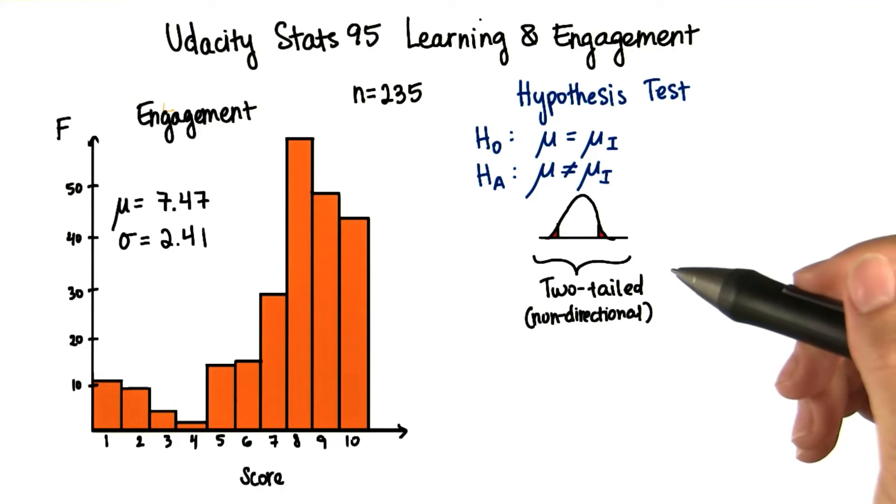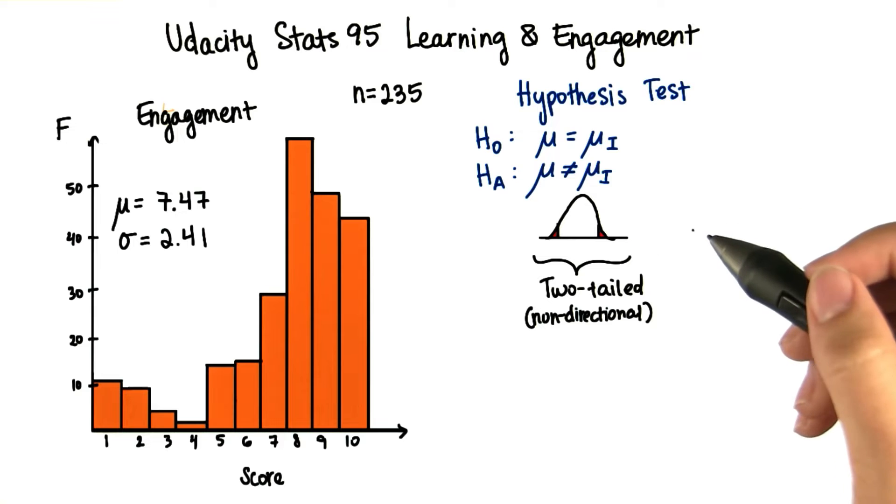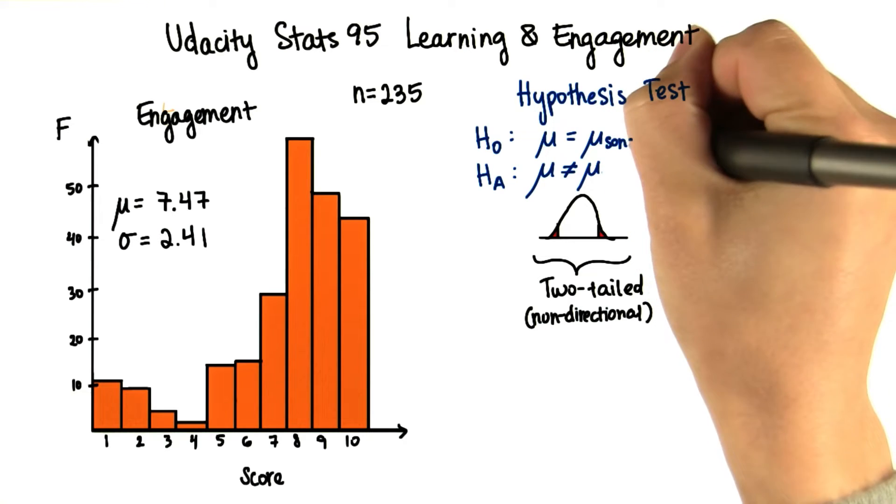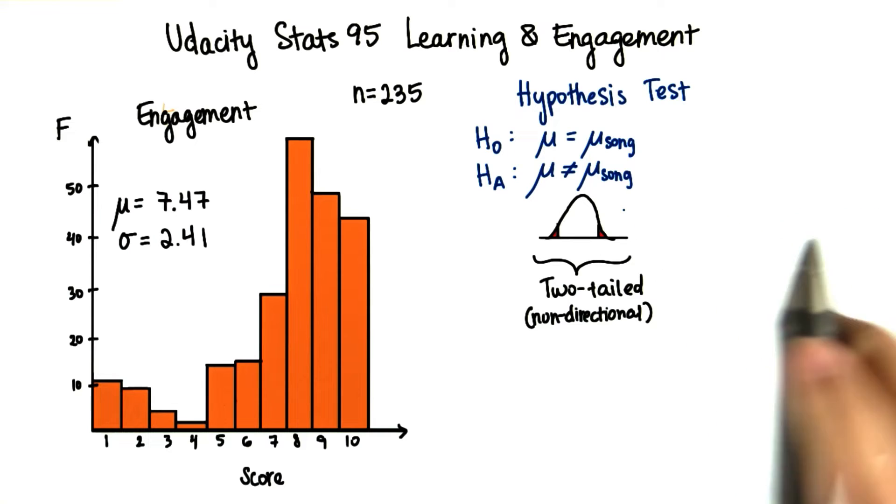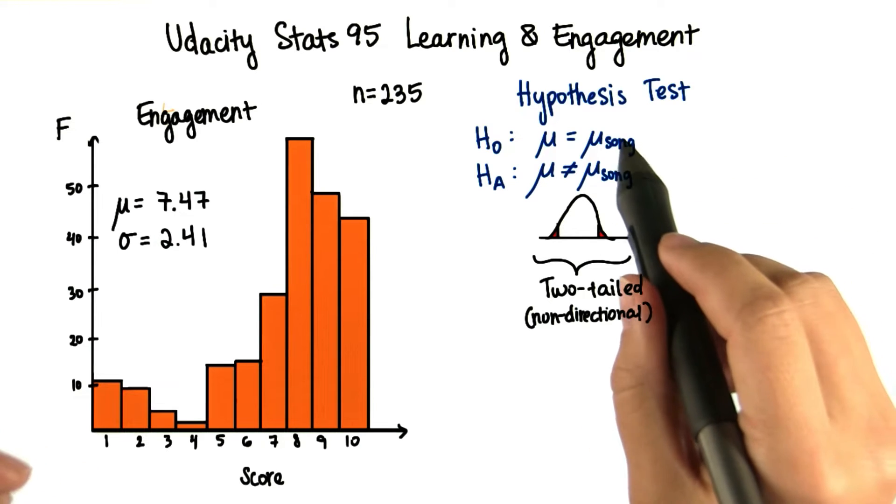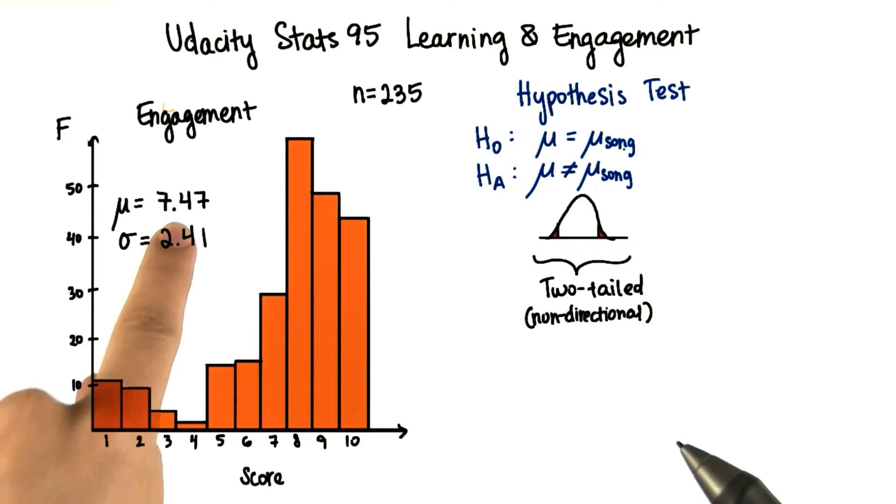Let's say we don't know how the song might impact engagement. It could make students less engaged or make them more engaged. Therefore, we're going to put here mu sub song, because the song is the intervention. We're going to try to test if this parameter will be significantly different from what you already found.